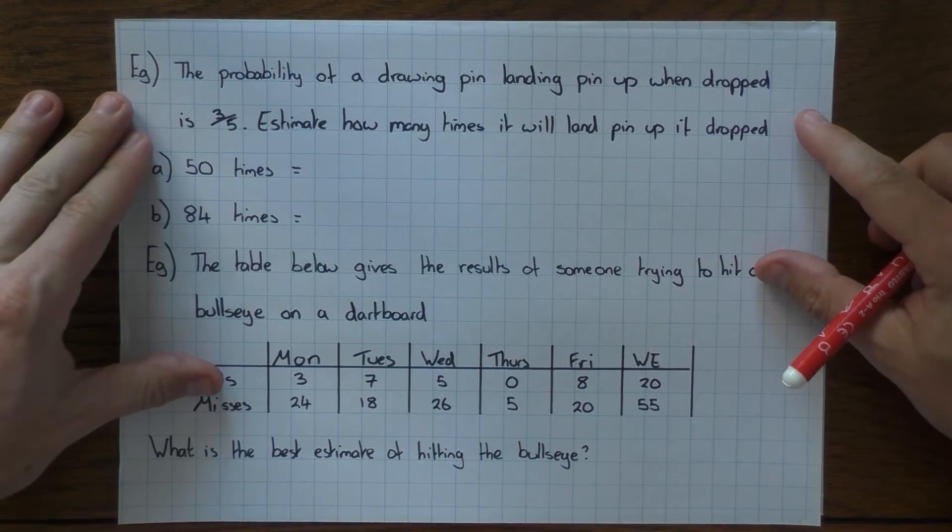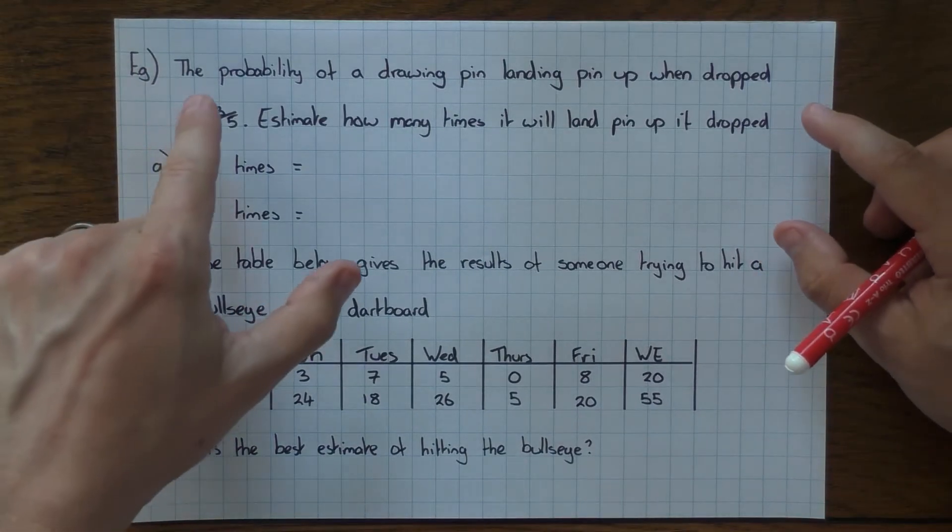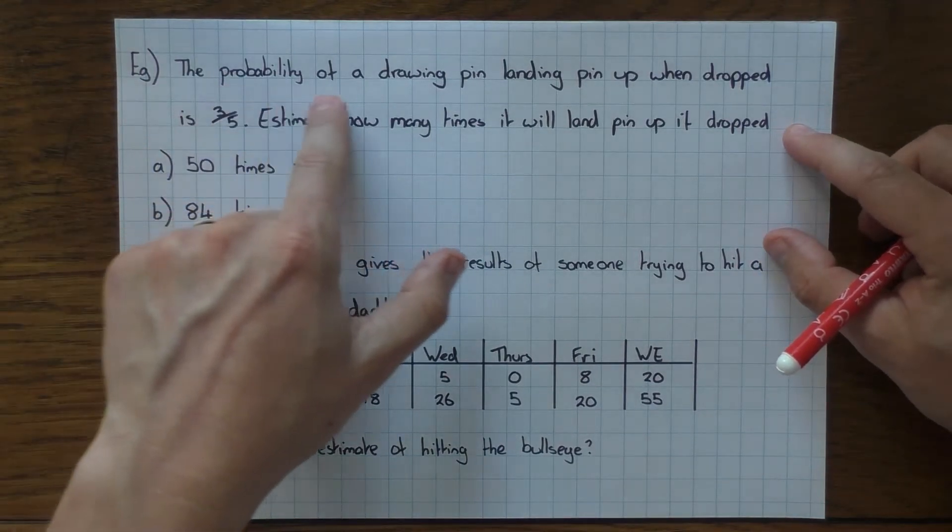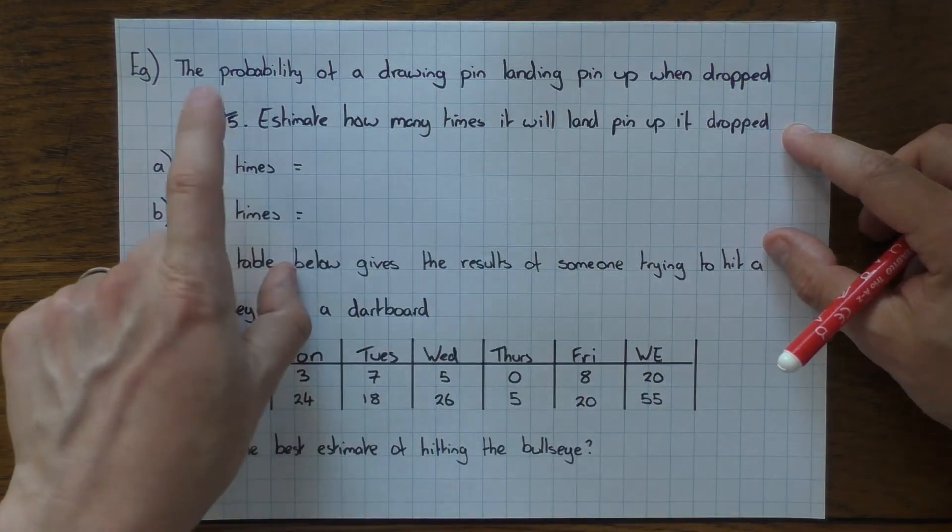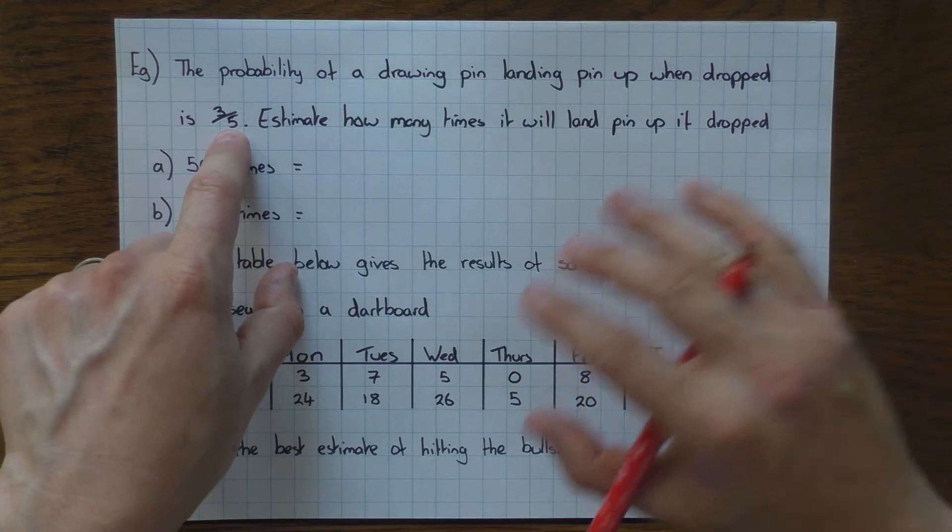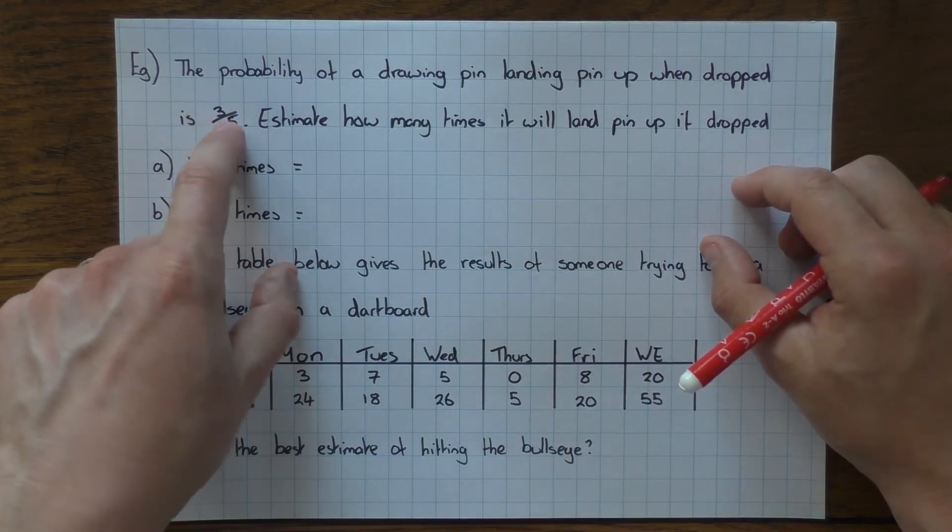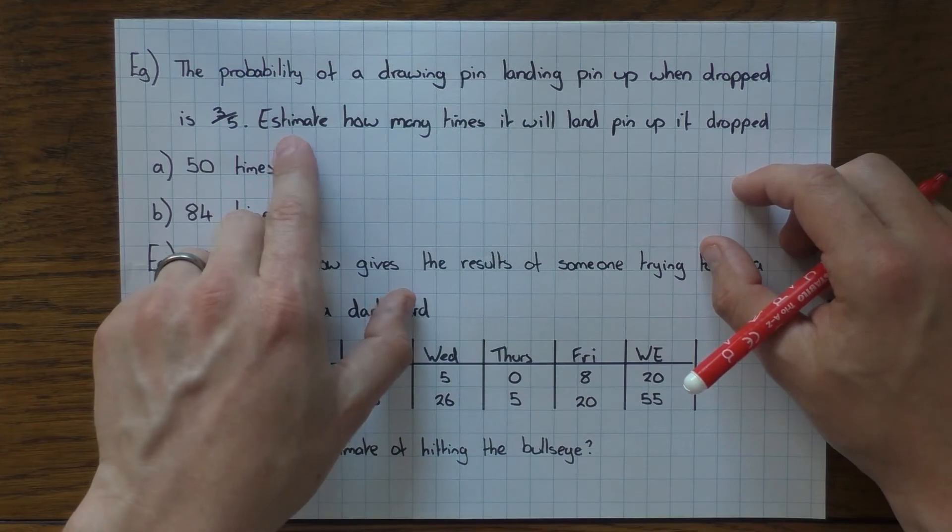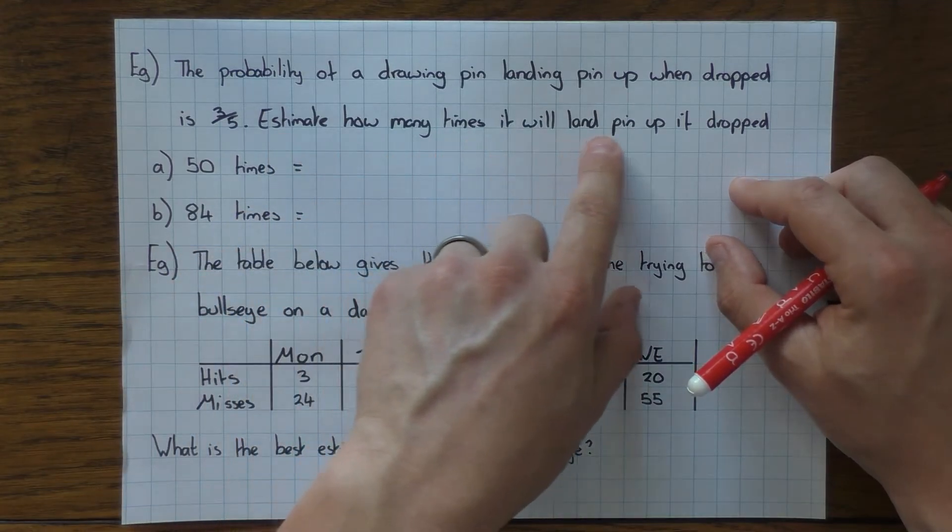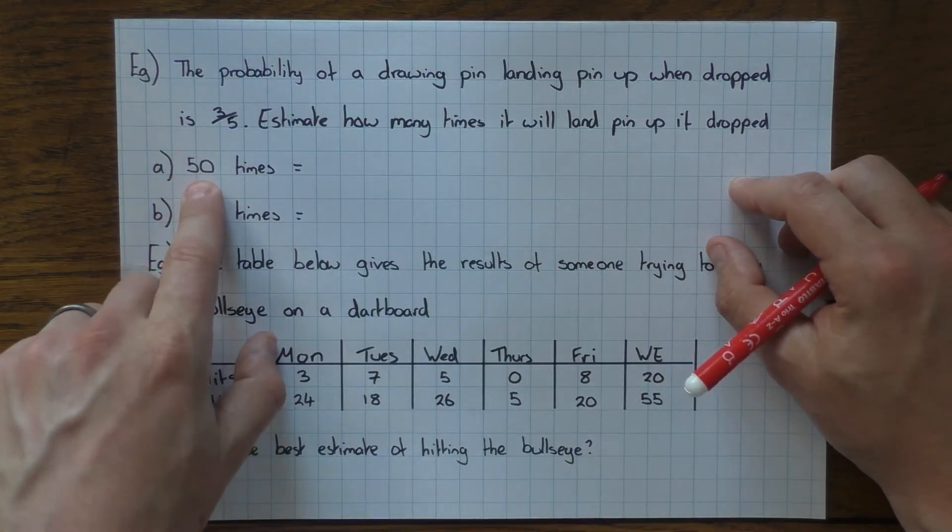So this is now looking at the expected frequency. In this example, the probability of a drawing pin landing pin up when dropped is three fifths. I tell you what the probability is, or they may have already done an experiment and this is the relative frequency. Either way, we know what we're dealing with.